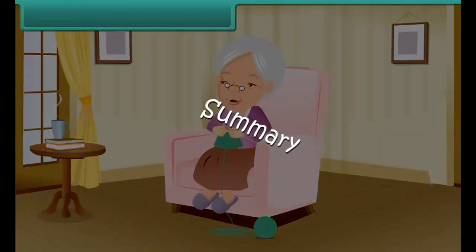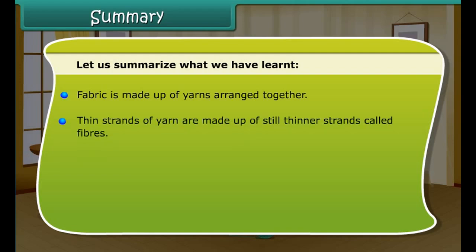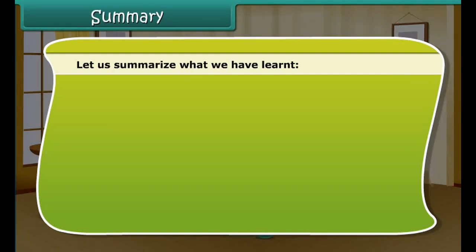Knitting: You may have seen beautiful sweaters — do you know how they are made? Sweaters are made by knitting, where a single yarn is used to make a piece of fabric. Socks and many other clothing items are also knitted fabrics. Knitting can be done by hand as well as on machines.